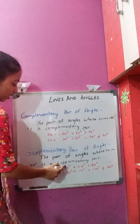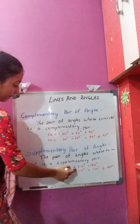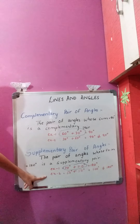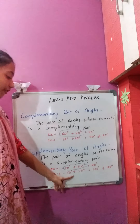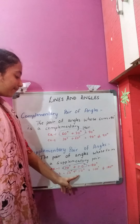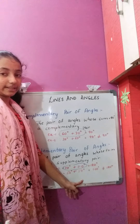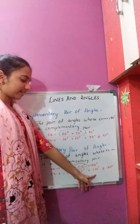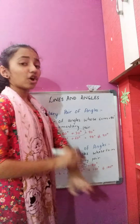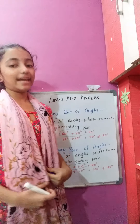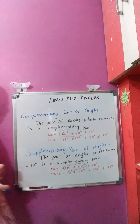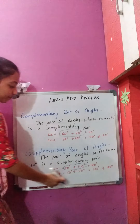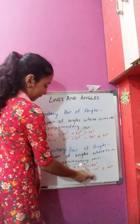In example 2: 50 degrees plus 50 degrees equals 100 degrees, which is not equal to 180 degrees. So this pair is not a supplementary pair.